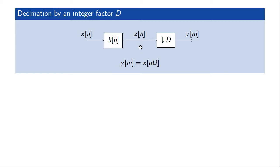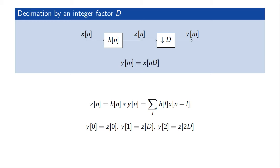If we were to implement this circuit directly, just as stated in this diagram, we would take X of n, convolve it with the impulse response H of n to get Z of n, and then remove samples from Z of n in order to get Y of n.